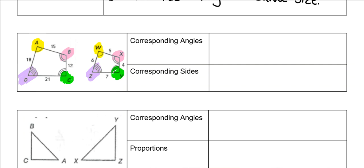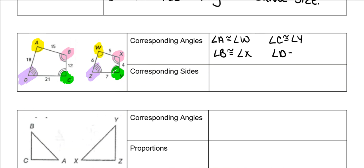So those are all the corresponding angle pairs — similar to when we did congruent triangles. Angle A is congruent to angle W, angle B is congruent to angle X, angle C is congruent to angle Y, and angle D is congruent to angle Z.